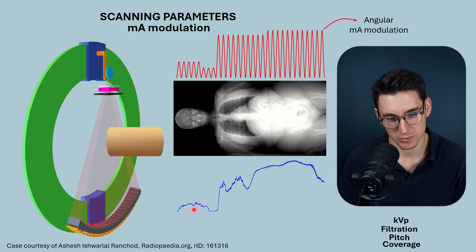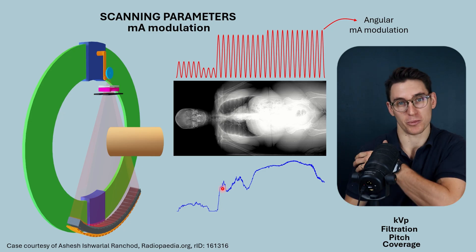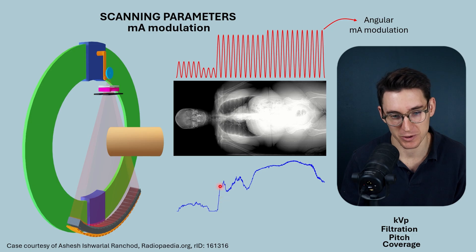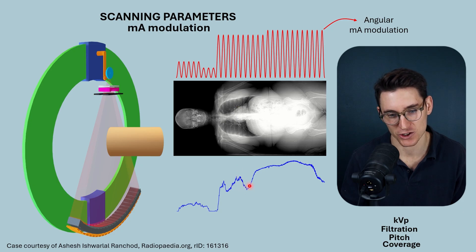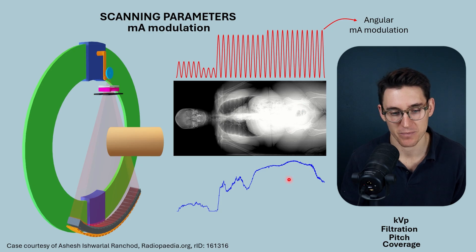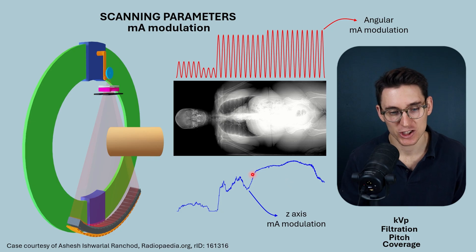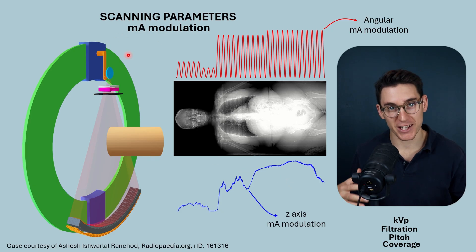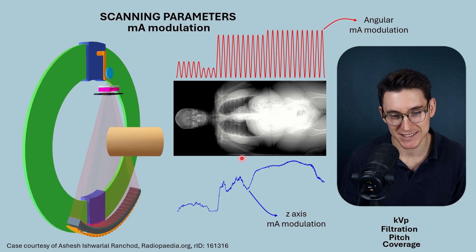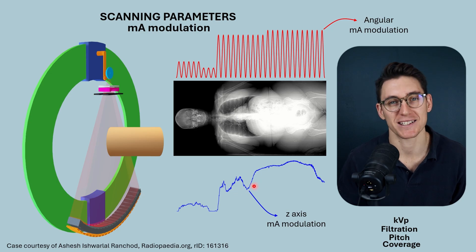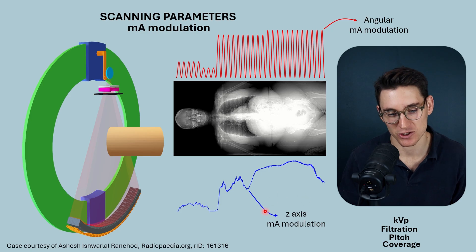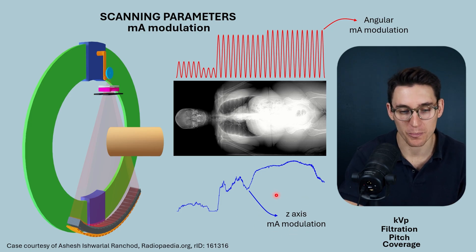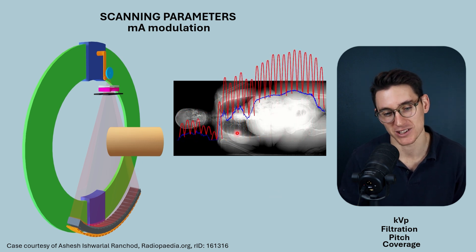Taking each pixel value and summing them for each column in the scanogram, we can plot that on a graph. The petrous bone has more attenuation than the skull, the neck has very little, the shoulder girdle — with the clavicle, scapula, and head of the humerus — is more dense, lung tissue is less dense, and the pelvis has even more attenuation. This is what's known as modulation in the z-axis: modulating tube current based on both the dimensions of the patient and the density of different structures. This is analogous to automatic exposure control in radiography.